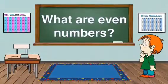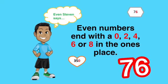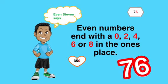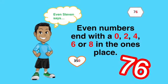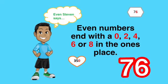What are even numbers? Even Stephen says even numbers end with a 0, 2, 4, 6, or 8 in the ones place. In the number 76, 6 is in the ones place and 6 is even. Therefore, 76 is an even number.